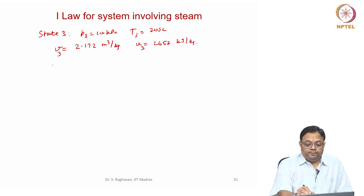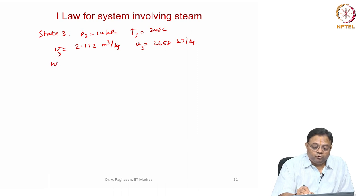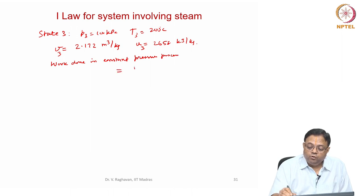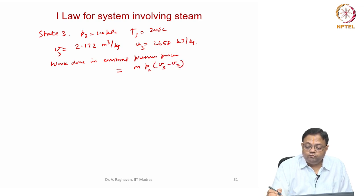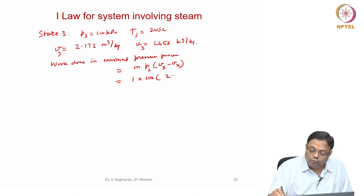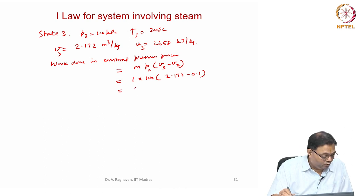Work done in the constant pressure process equals m·P·(v3 − v2) = 1 × 100 kPa × (2.172 − 0.1) = 207.2 kJ.